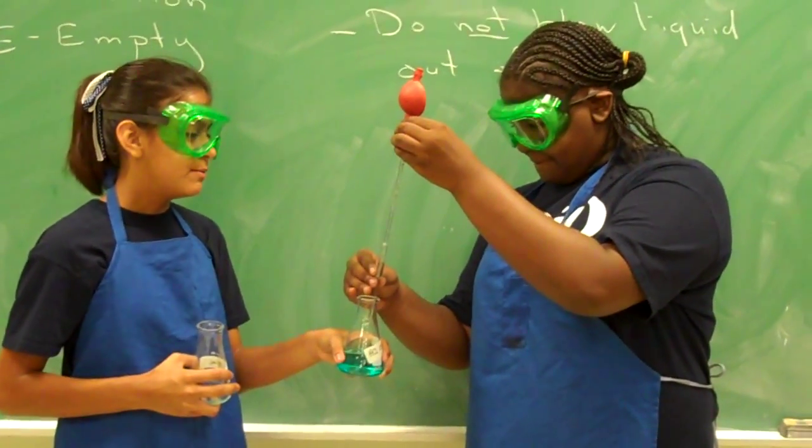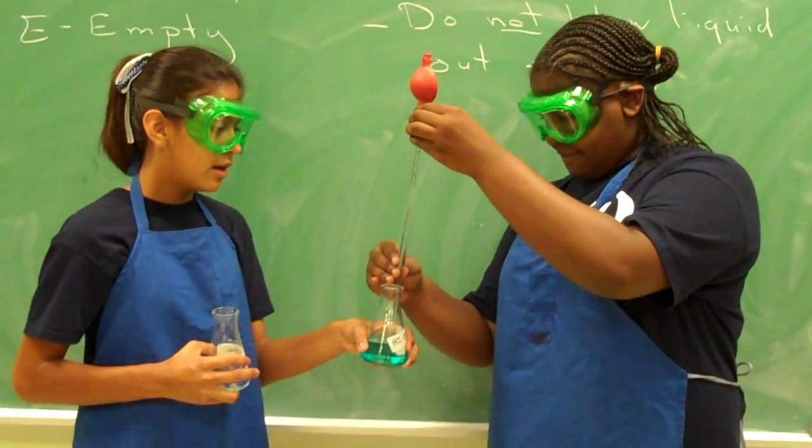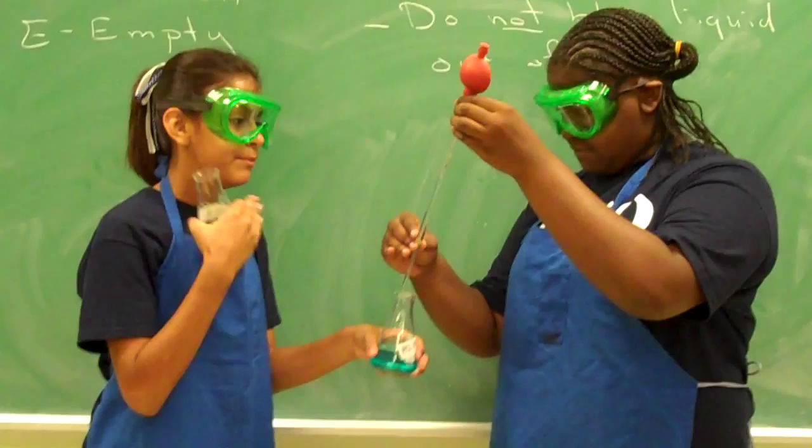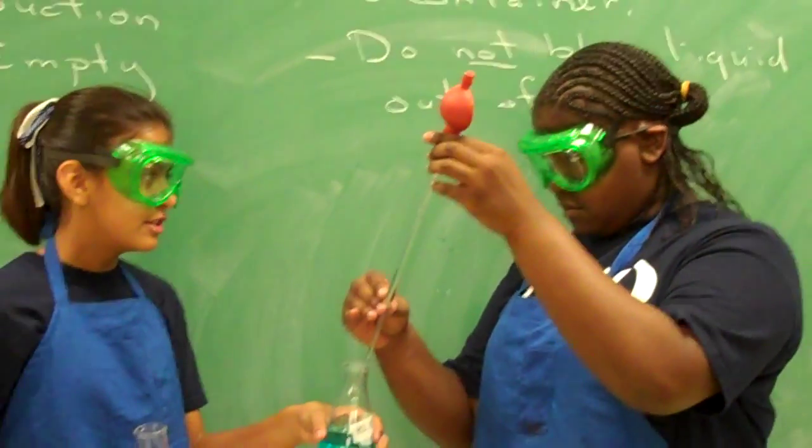Hold the pipette straight up so it'll work better. As you can see, there is a brown line right there that indicates that it's 5 milliliters exactly.